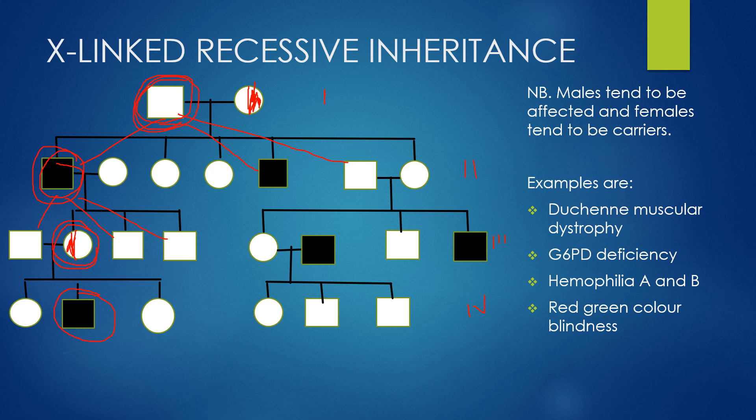Examples of X-linked recessive inheritance diseases are Duchenne muscular dystrophy, G6PD deficiency, hemophilia A and B, and red-green color blindness.